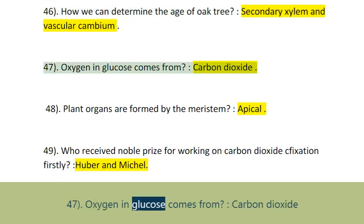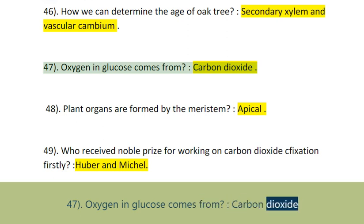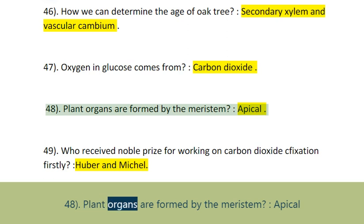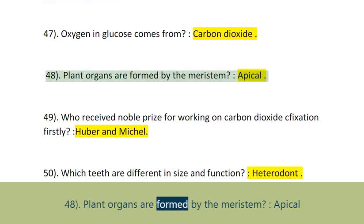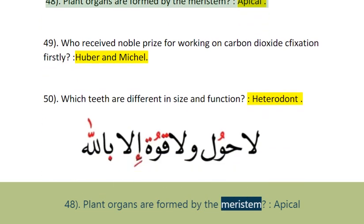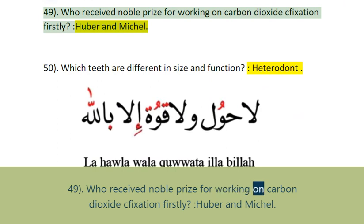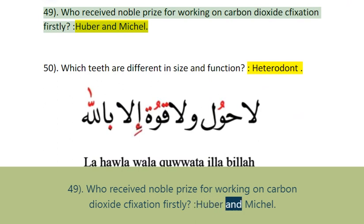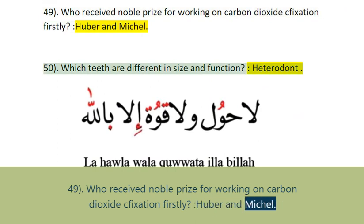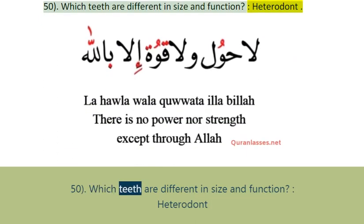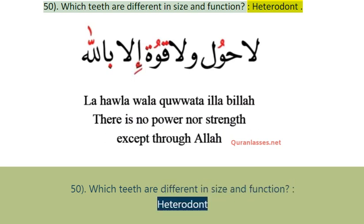Question 47: Oxygen in glucose comes from carbon dioxide. Question 48: Plant organs are formed by the apical meristem. Question 49: Who received the Nobel Prize for working on carbon dioxide fixation firstly? Huber and Michel. Question 50: Which teeth are different in size and function? Heterodont.